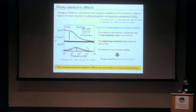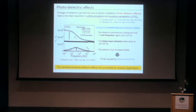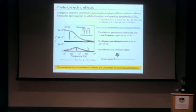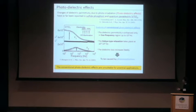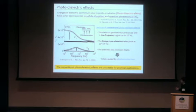Photodirected effects are the changes of electric permittivity induced by photo-irradiation. These effects have been reported in sulfide phosphates and the quantum paraelectric strontium titanate. The dielectric permittivity is enhanced only in the low-frequency region, a Debye-type relaxation is observed at the kHz region, and the dielectric loss increases fatally. The origin of conventional photodirected effects is caused by photo-conduction, making them unsuitable for practical applications.